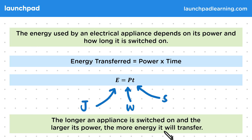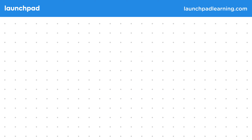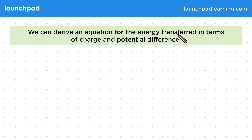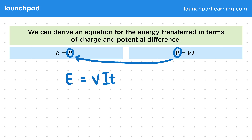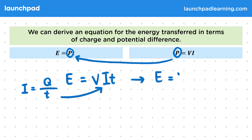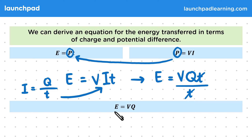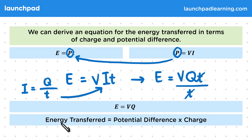How do we calculate the energy transferred without knowing the power? We can derive an equation for energy transferred in terms of charge and potential difference. We know that E = P × T and P = V × I, so substituting P gives E = V × I × T. We also know that I = Q/T, so substituting that in gives E = V × Q × T / T. Cancelling the T's, that becomes E = V × Q: energy transferred equals potential difference multiplied by charge.